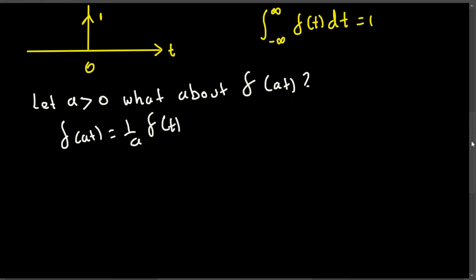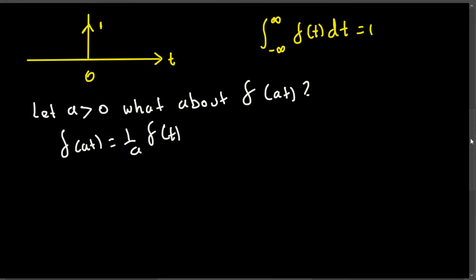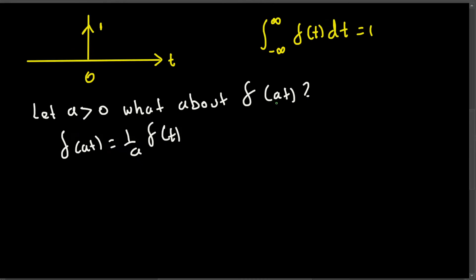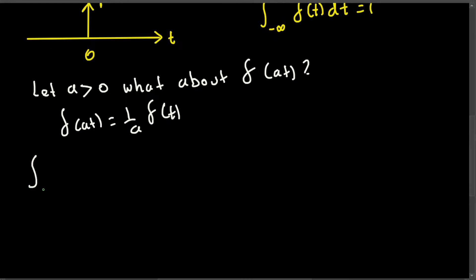To prove this, instead of t we are going to substitute delta of at and see what we get. So here, from negative infinity to infinity, instead of t I'm substituting at and then dt.